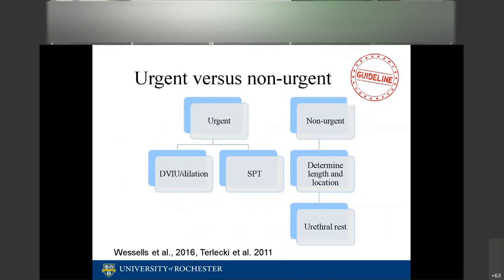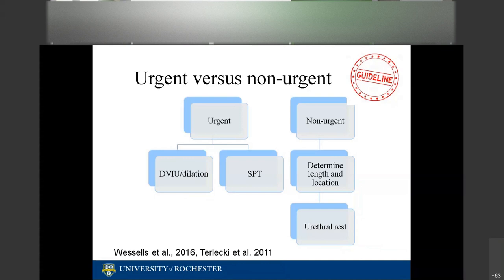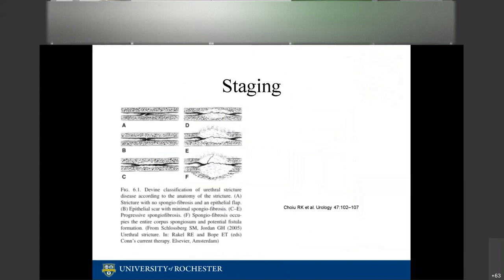The guidelines speak clearly about approaching urethral strictures. In an urgent setting, do what is necessary — perform a DVIU, dilation, or place a suprapubic catheter. In a non-urgent setting, determine the length and location of the stricture before proceeding. The concept of urethral rest — based on a 2011 case series — involves allowing 4 to 12 weeks before imaging to get the best understanding of stricture length and where spongiofibrosis starts and ends.